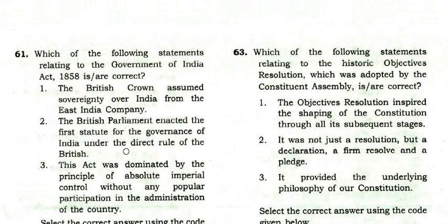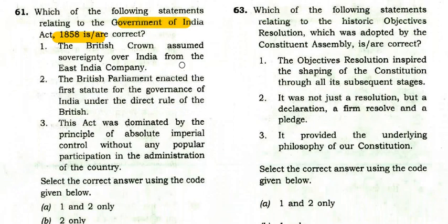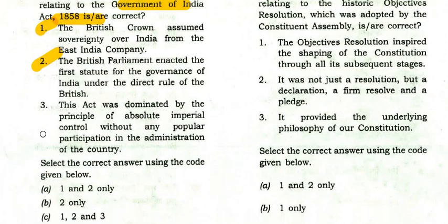Which statements relating to the Government of India Act 1858 are correct? The British Crown assumed sovereignty over India from the East India Company — true. The British Parliament enacted the first statute for governance under direct British rule — true. This act was dominated by absolute imperial control without popular participation — true. So option C: all three are correct.